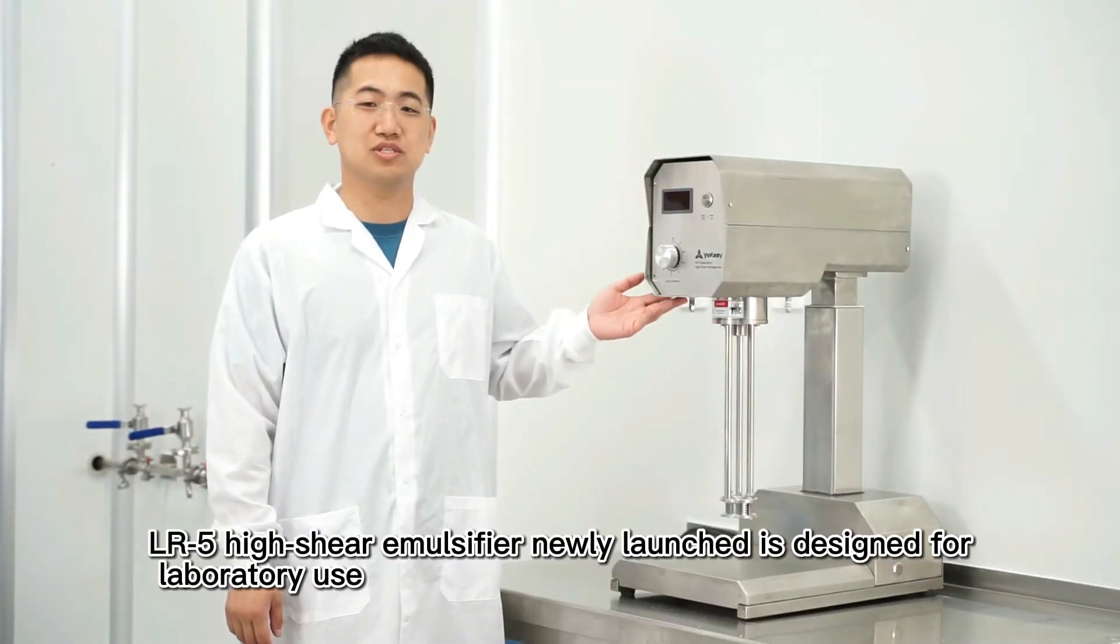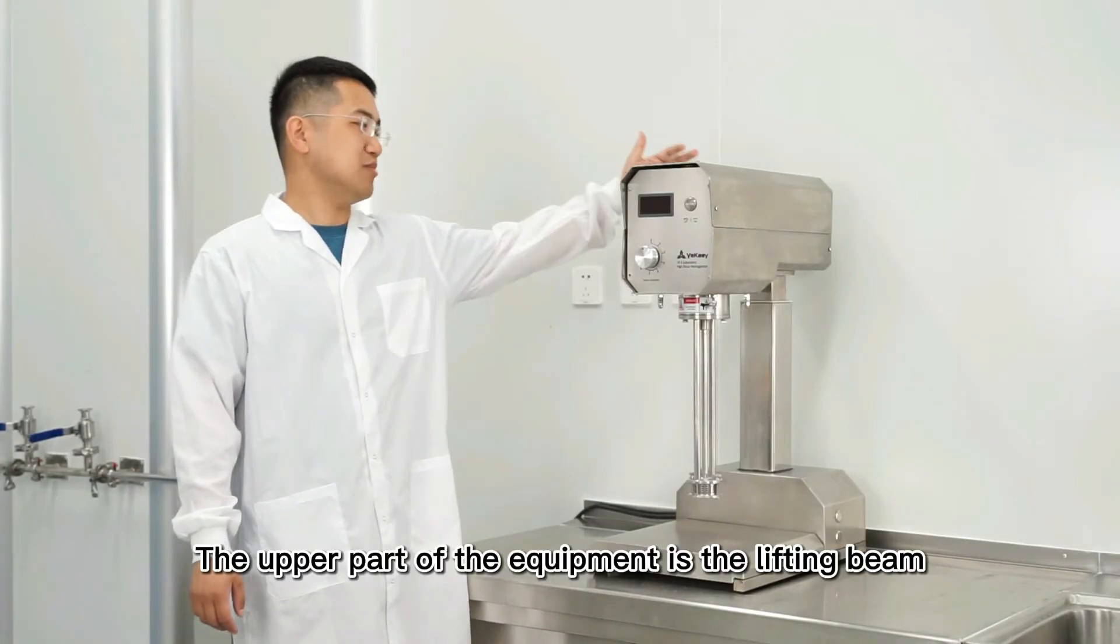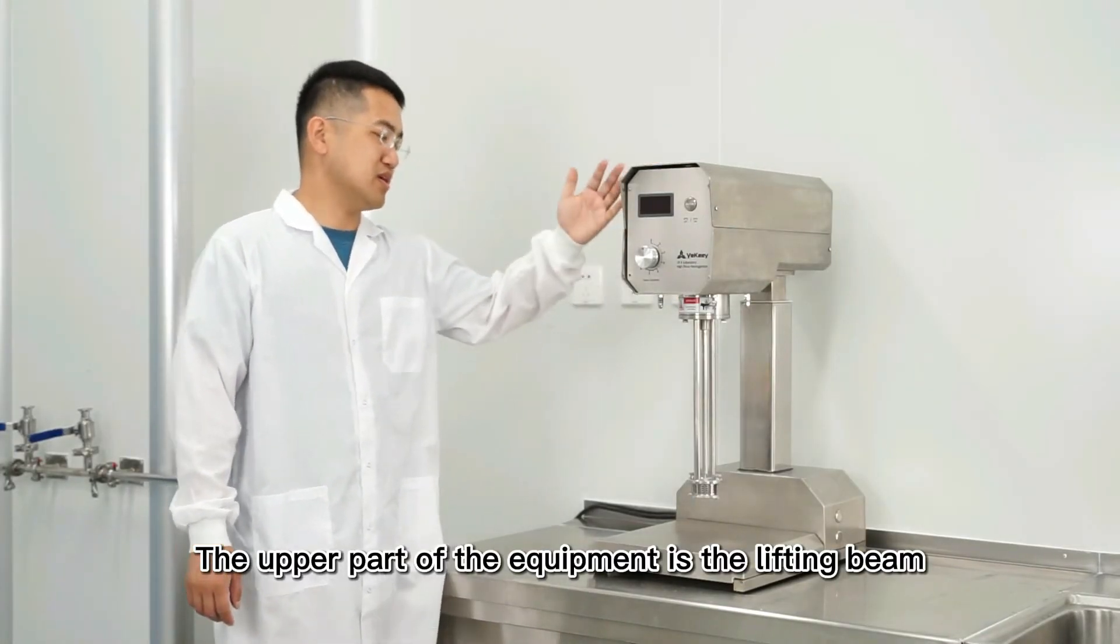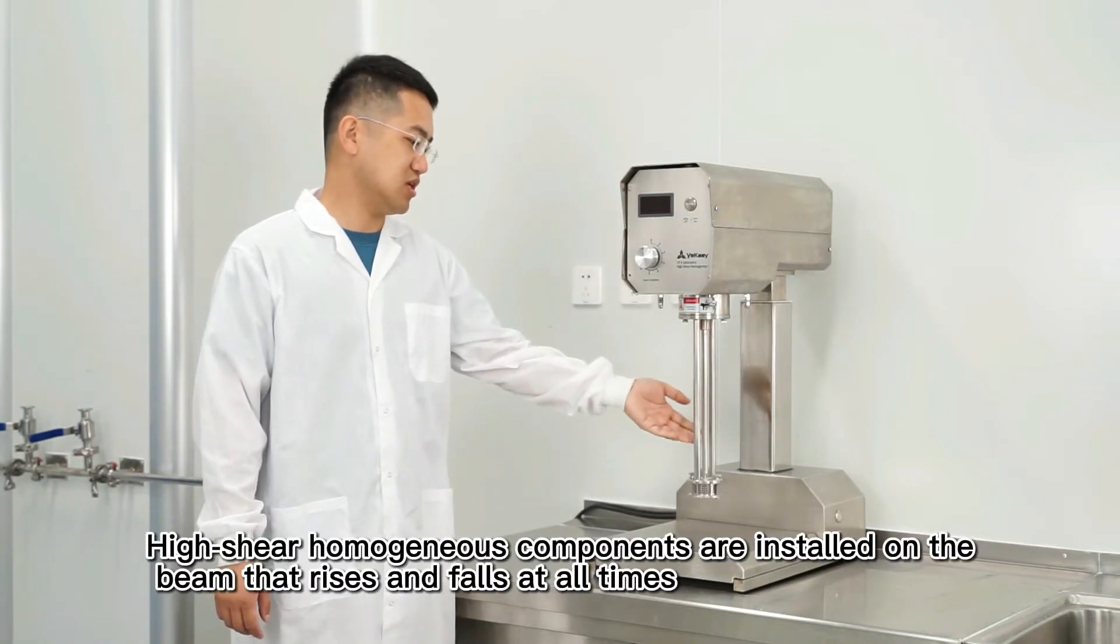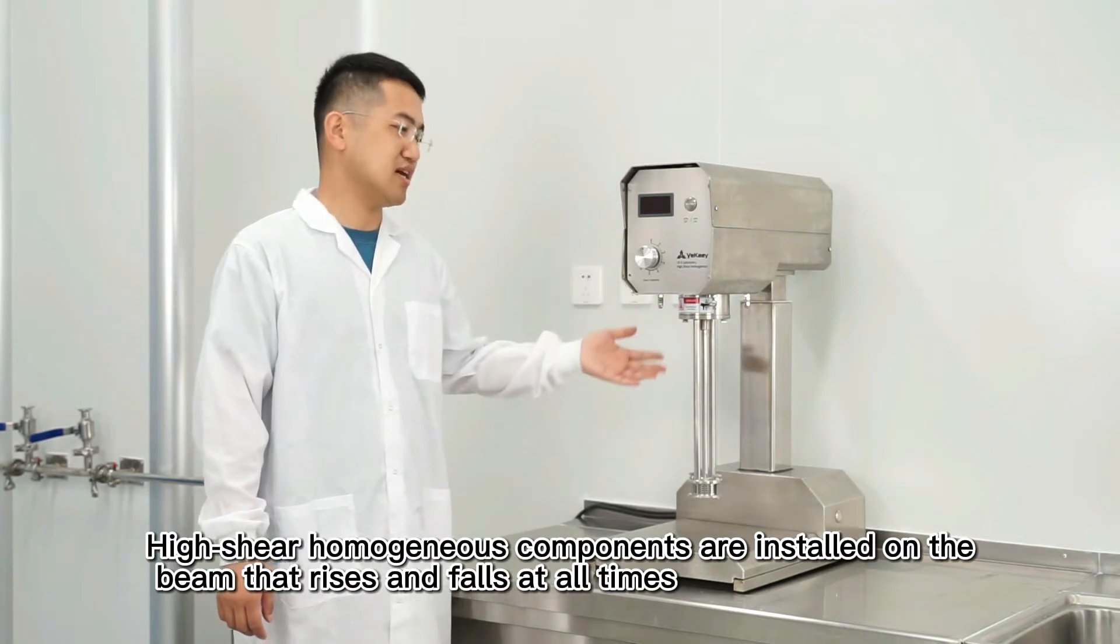The LR-5 high-shear emulsifier, newly launched, is designed for laboratory use. The upper part of the equipment is the lifting beam. High-shear homogeneous components are installed on the beam that rises and falls at all times.